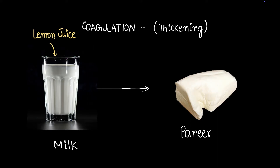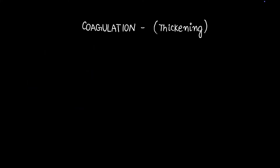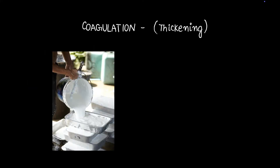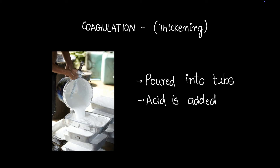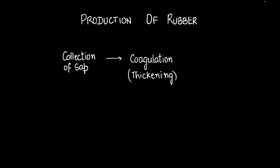You can see a similar process when milk turns into curd, or when blood clots after a small cut — that is also coagulation of blood. For rubber, we pour the sap into tubs, add an acid — similar to how we added lemon juice to milk — and allow it to set. After a few hours, just like milk turns into paneer, the rubber sap turns into a thick slab.